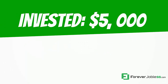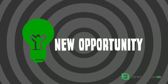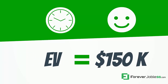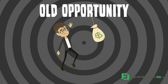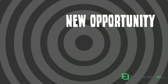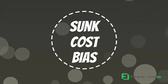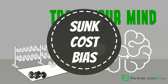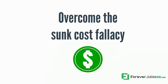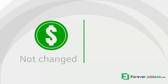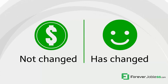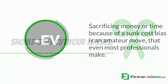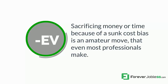If you've already invested $5,000 in a project where the EV is $50,000 and you find an opportunity where all else is equal — time, happiness level — but the expected value is $150,000, most people would let the $5,000 they invested in the previous project keep them from gaining an extra $100,000 on a better opportunity. Sunk cost bias would convince them that they can't give up the initial project or they'd lose $5,000. Most people have not trained their mind enough to overcome the sunk cost fallacy to make an additional $100,000. Even if the monetary expected value has not changed, if your level of happiness has changed relative to where you could invest time or money, you should still cut your losses. Sacrificing money or time because of sunk cost bias is an amateur move that even most professionals make.